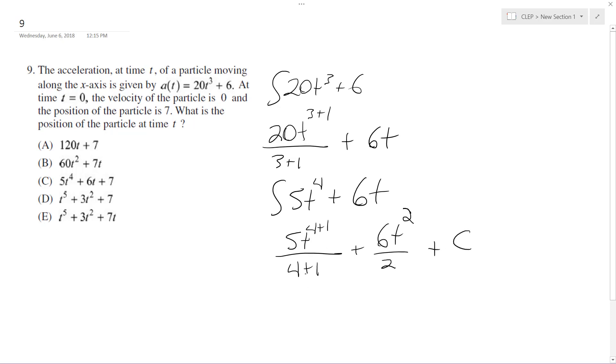So what we get is 5/5, which gives us t⁵ + 3t² + c. And our c is 7, because that's our constant from the initial condition.